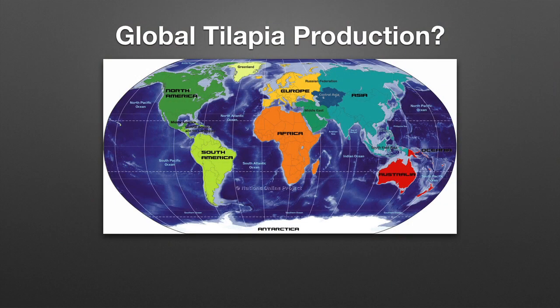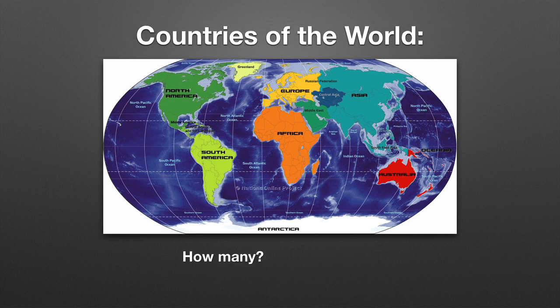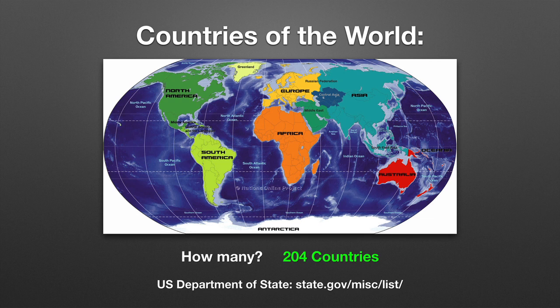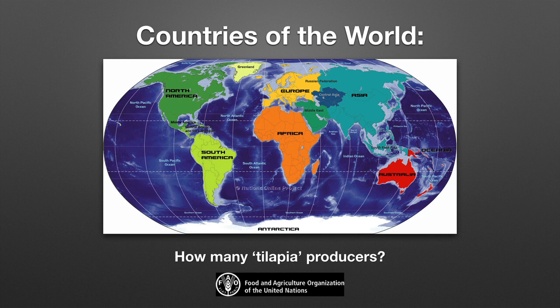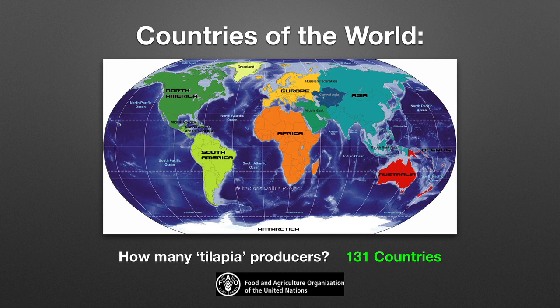What is global tilapia production? There are 204 countries in the world according to the U.S. Department of State. Of those, 131 countries are tilapia producers based on FAO data, and 84 countries specifically produce Nile tilapia. We can state that the majority of the world is producing tilapia and that many producers are specifically producing Nile tilapia.